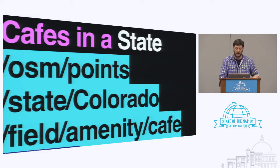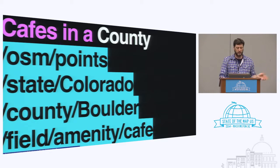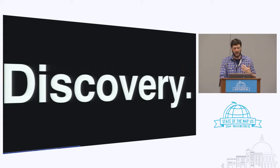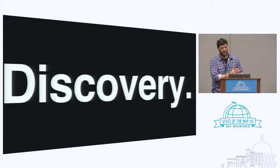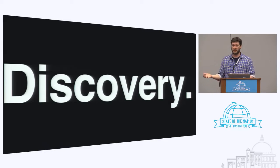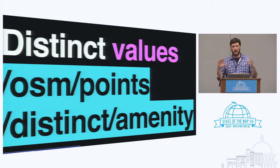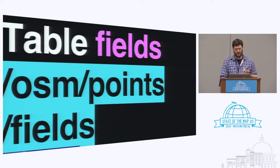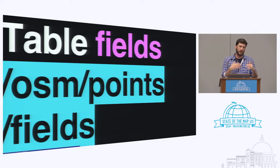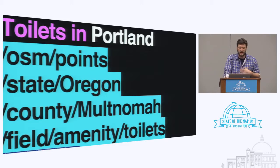If I can get counts, I really want to discover more about what's inside. I can drill in further and get cafes within a state: OSM/points/state/colorado where amenity is cafe. But rather than sticking big SQL in my URL, we provide a hook that can be referenced and always give that representation of the data. So now it's: /field/amenity/cafe — then county/boulder/field/amenity/cafe. We also provide hooks into distinct values: OSM/points/distinct/amenity gives you all the distinct values for that field. We can also get distinct fields to understand the schema.